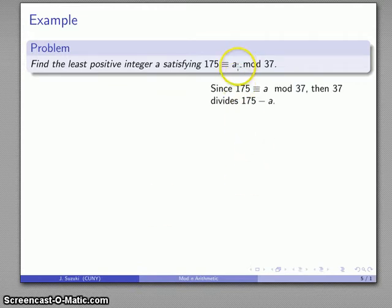Since we want a to be congruent to 175 mod 37, we know that 37 divides 175 - a. Let's set that up.